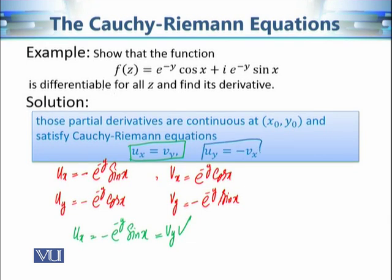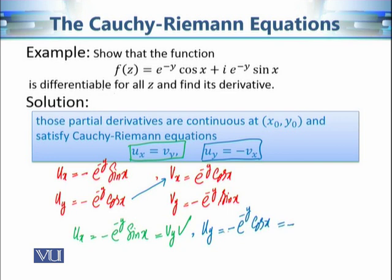For the second Cauchy-Riemann equation, u_y = −e^(−y)·cos(x) and this equals −v_x, since v_x = e^(−y)·cos(x). So u_y = −v_x, meaning the second Cauchy-Riemann equation is also satisfied. Therefore all three conditions of the theorem are satisfied.